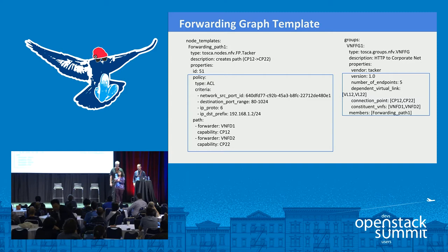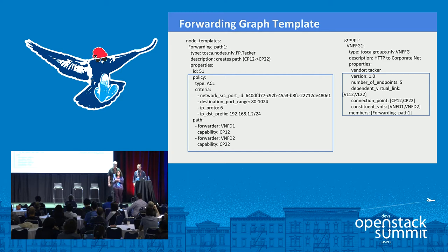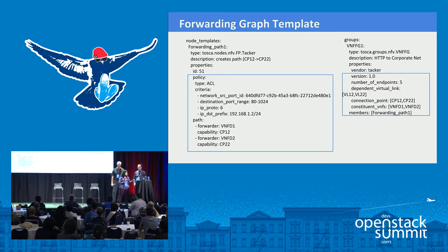The path section represents the actual connection points stitched together to create the service function chain, represented as an ordered set of forwarder capability information. The chain is created using two VNFs which expose capabilities via CP12 port and CP22 port — the two connection points represented by the two VNFs.